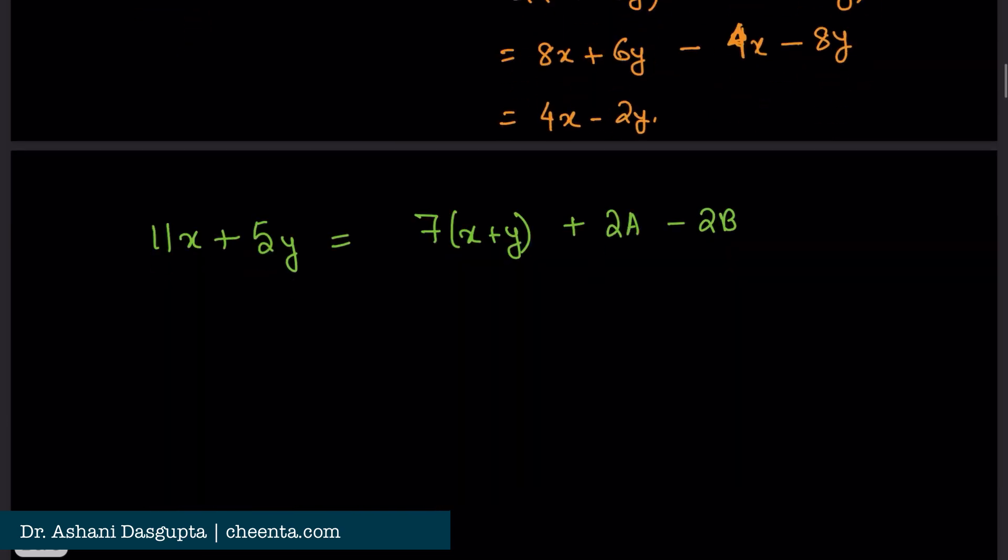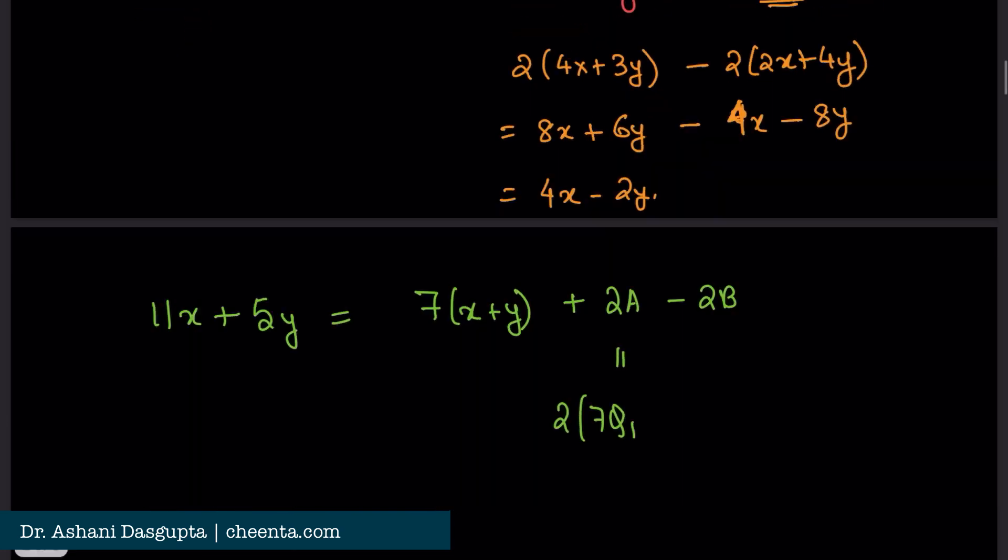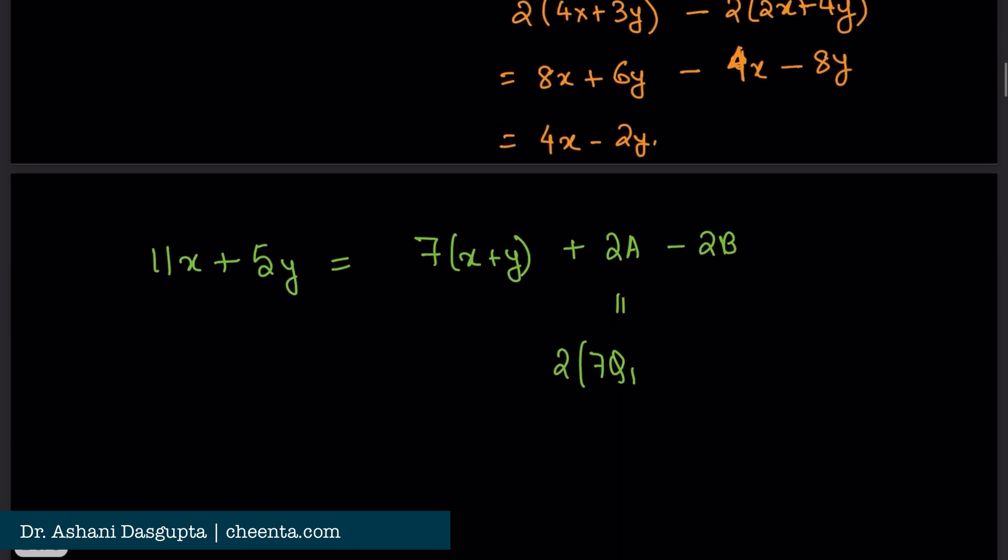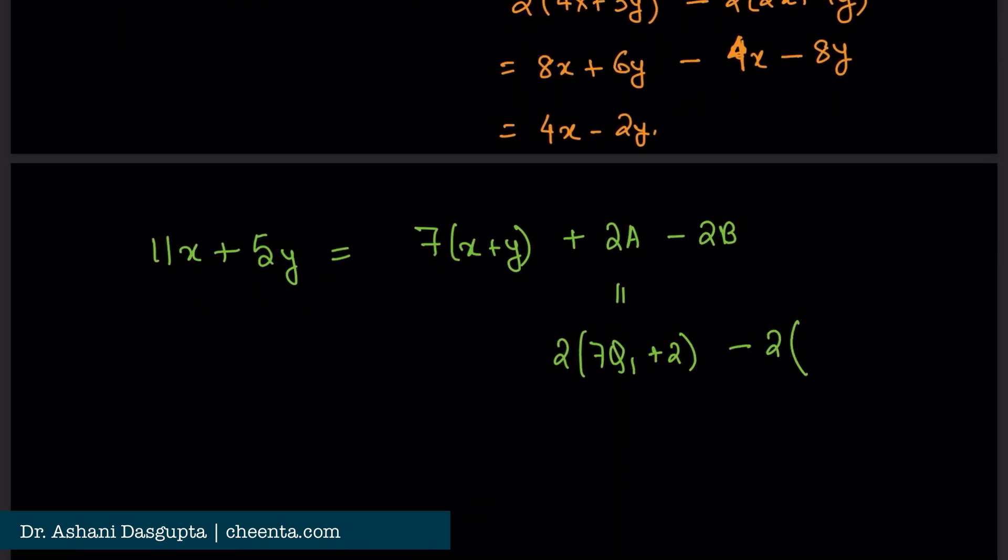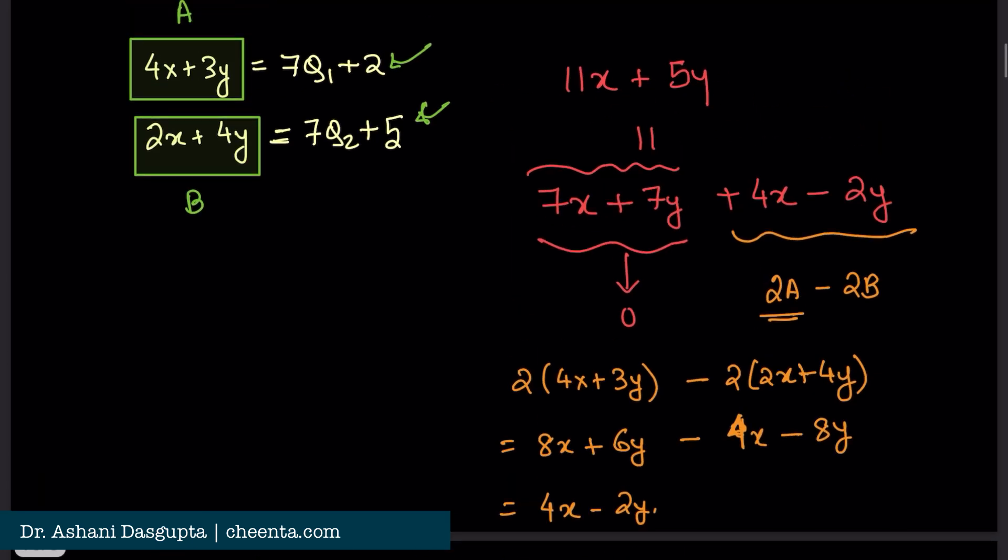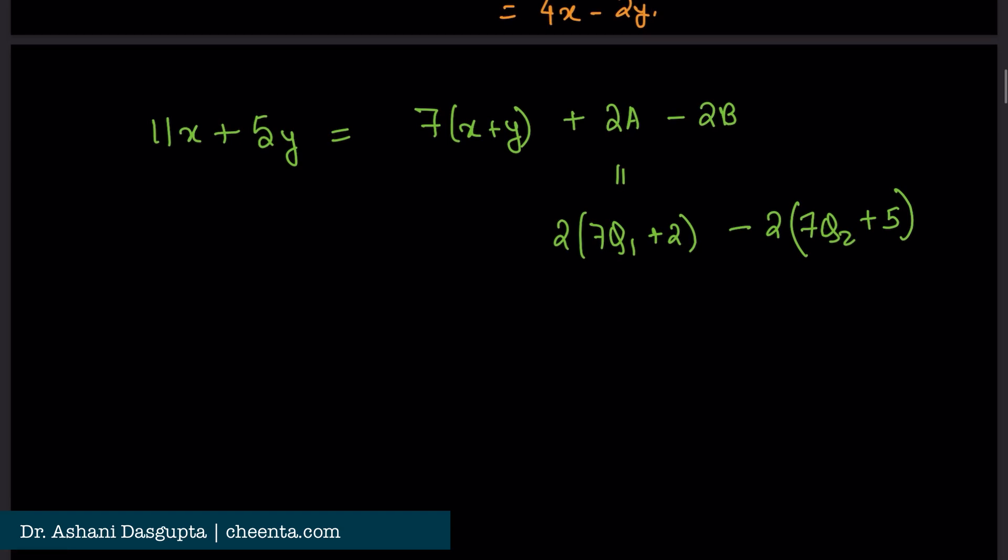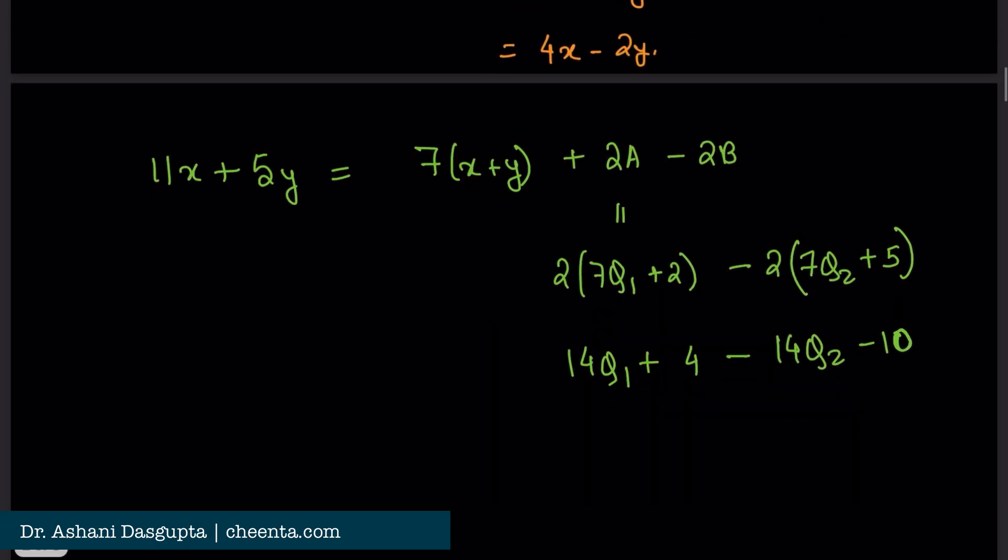This is 2a. So, this is 2 times 7q1 plus 2 minus 2 times 7q2 plus 5. This becomes 14q1 plus 4 minus 14q2 minus 10. And, of course, we have the 7 times x plus y here.